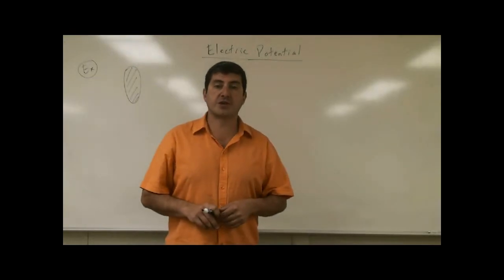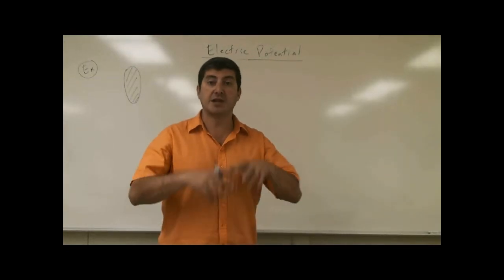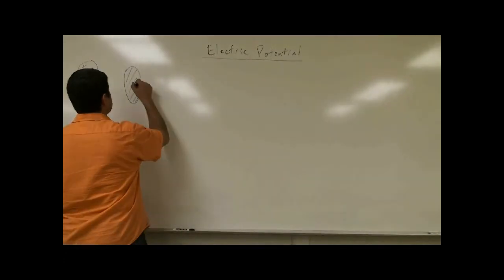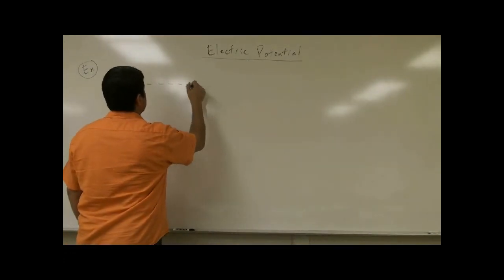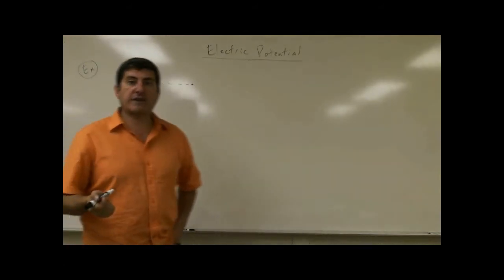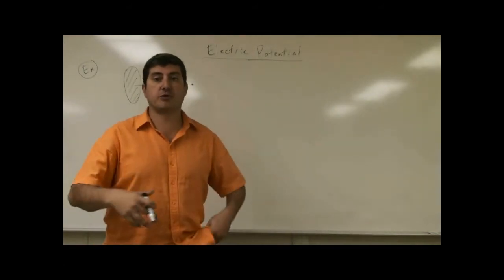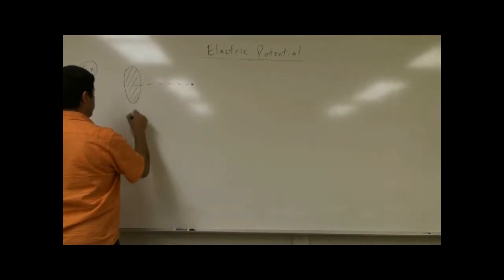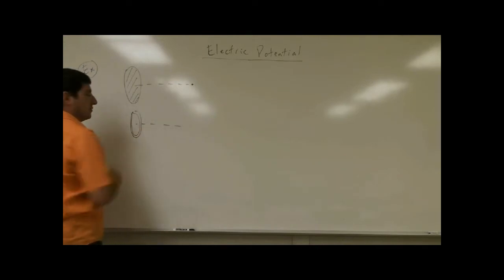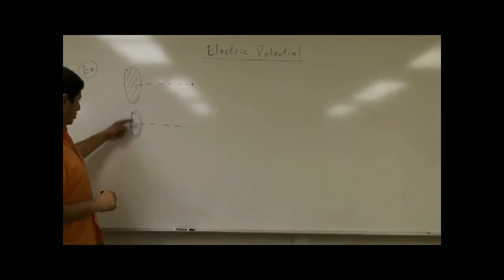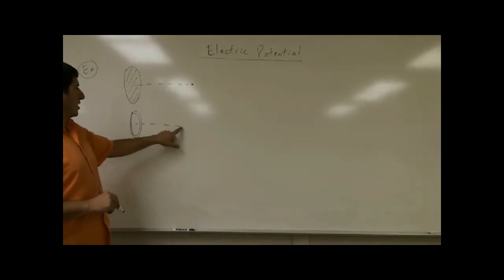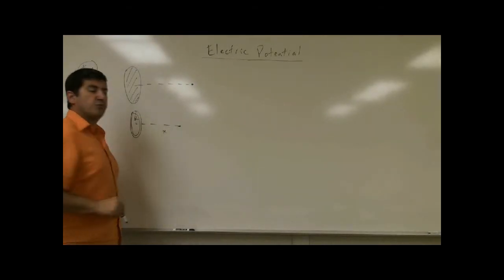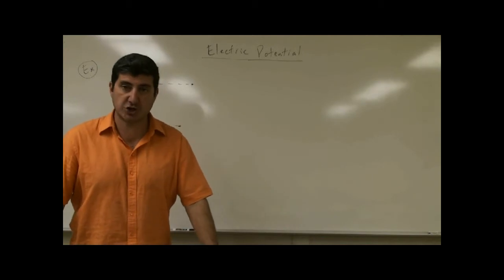I want to show you how to derive the equation for the electric potential of a disc, a certain distance away from the axial line of the disc. In a previous video, I've shown how to derive the equation for the electric potential of a ring. The ring is actually very simple to find the potential of, since all points of the ring are equidistant from a certain point x, and with electric potential, I don't even need to worry about direction.